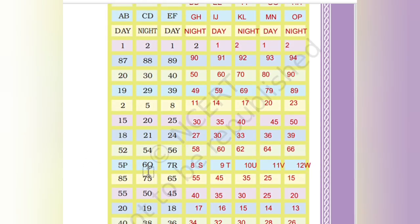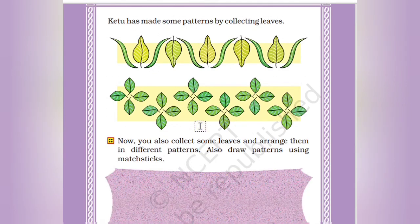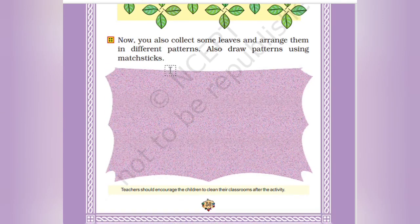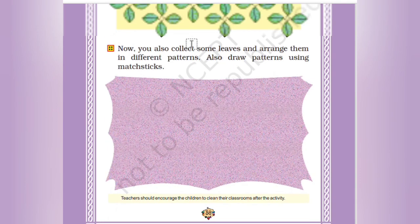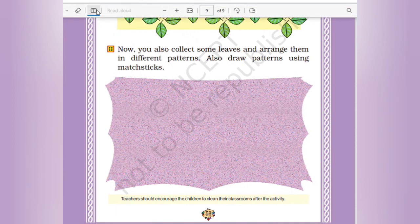The next one is, Ketu has made some patterns by collecting leaves. The pattern is very nice to see. Make your patterns with some leaves and arrange at the different pattern. Also, draw the patterns using match sticks. So match sticks will be used.